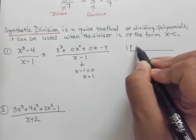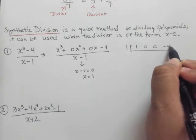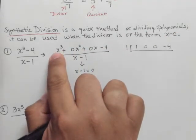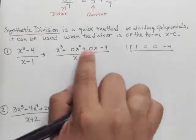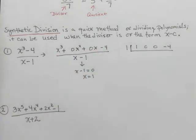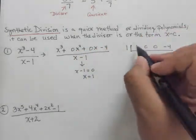and I'm going to write 1, 0, 0, and negative 4, which correspond to the coefficients 1, 0, 0, and negative 4 of the numerator. So let's see here. Or the dividend. All right? So let's see.